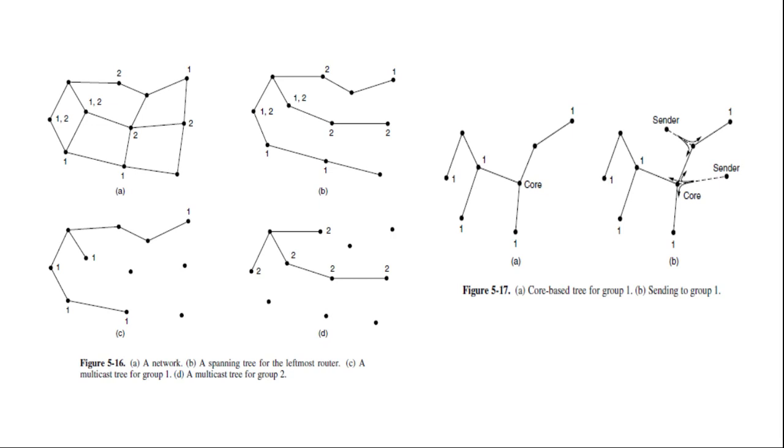In figure C, all the links that do not lead to hosts that are members of group have been removed, and the result is the multicast spanning tree for the leftmost router to send to group 1.